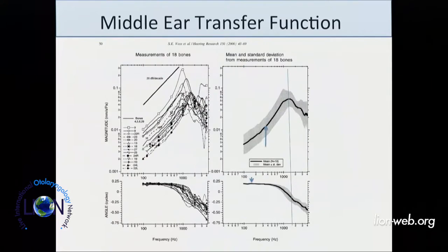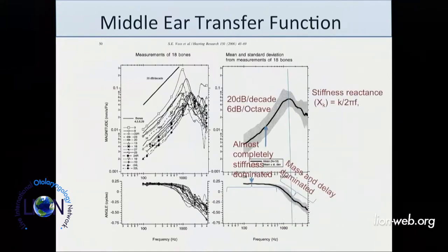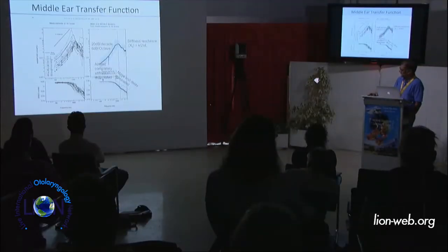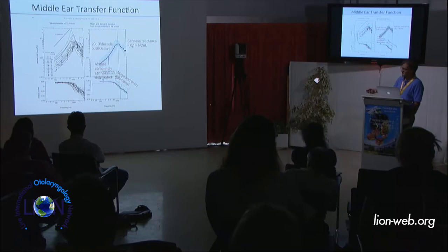If you look at the middle ear transfer function — this is from Voss et al., Zarsky's group — in the low frequencies it's almost completely stiffness-dominated, about 6 dB per octave. Below about 1 kHz, the reactance increases with frequency doubling. The middle ear is very stiffness-dominated in the low frequencies, below 1,000 Hz. It never really gets a truly mass-dominated region, though there is some mass dominance.